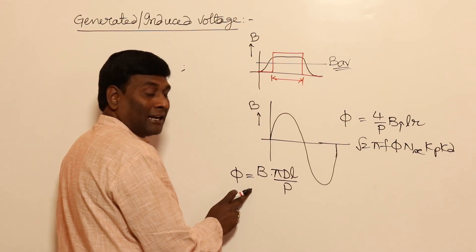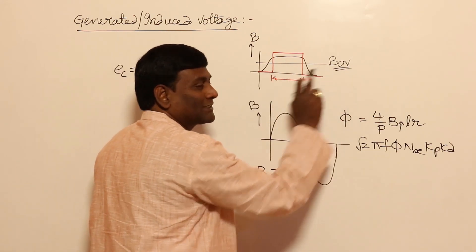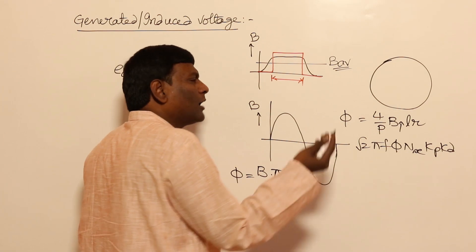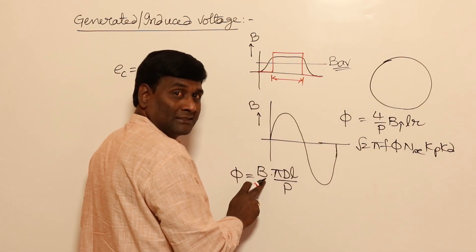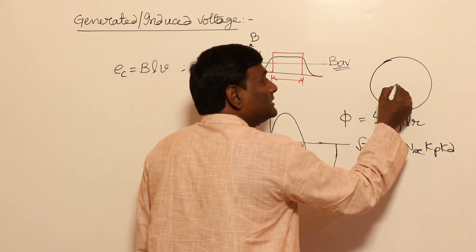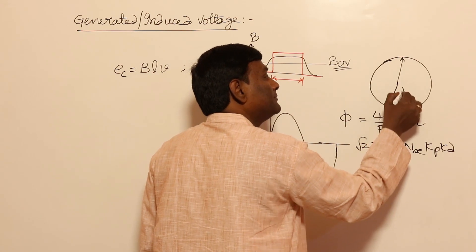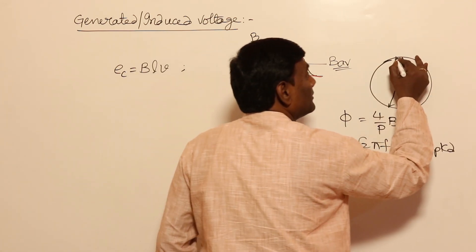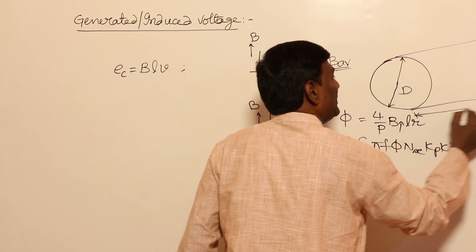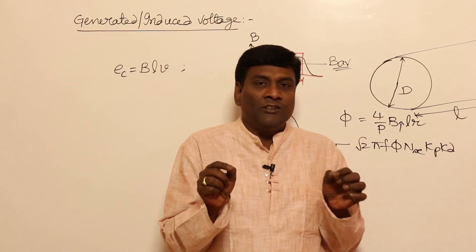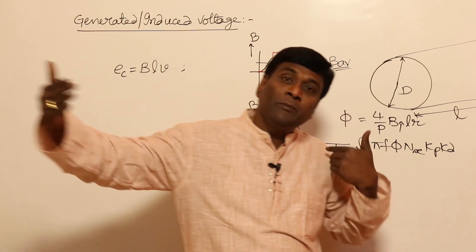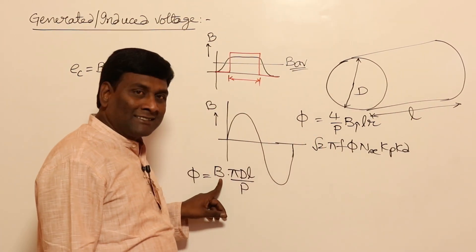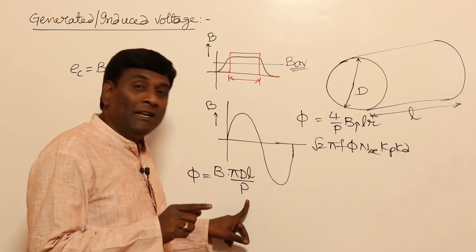Now, if I think of B_average, what is flux here? Flux is going to be flux density into (πD/P) into L. Think about it. Flux per pole — I would like to calculate. Flux density is the average flux density they have given. The area is going to be the air gap or pole area. Average flux density into πD (or 2πR) — so 2πR or πD is going to be the circumference into the active length of the machine. So flux = B_average * πDL / P.